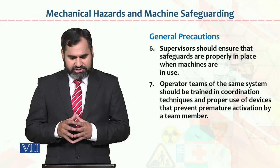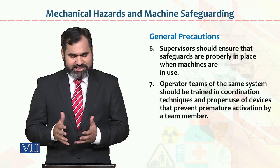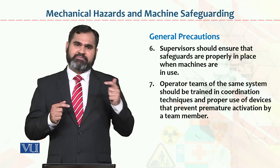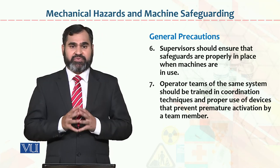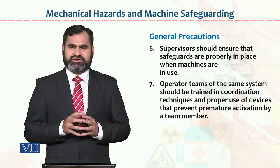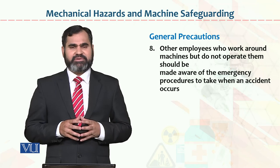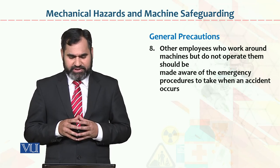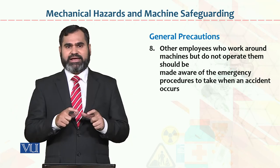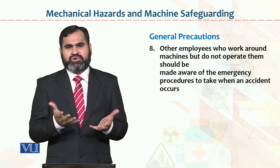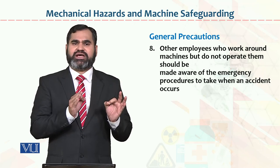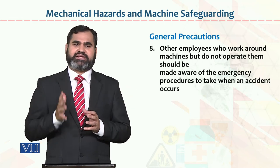Operator teams should be trained in coordination techniques and proper use of devices. You may have a supervisor, assistant boss, deputy manager, and managers who are familiar with all things. If a first-level employee cannot do the job, you can escalate to the second layer of management. Other employees who work around machines but don't operate them should also be made aware of emergency procedures. If there is an uncertain situation, they should know which machine to shut down.